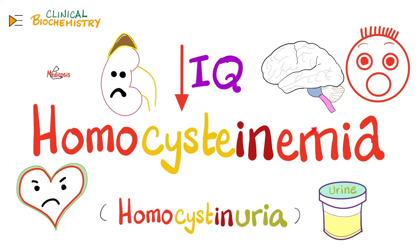Now let's review homocystinemia or homocystinuria. Here, the IQ is low. When there are excess homocysteine levels in the blood, it's called homocystinemia; in the urine, homocystinuria. Homocysteine is highly thrombogenic and can lead to angina, myocardial infarction, strokes, deep vein thrombosis, pulmonary embolisms, Budd-Chiari syndrome, and mesenteric vein thrombosis.